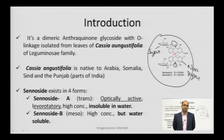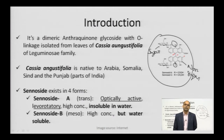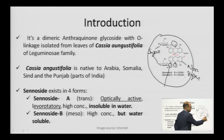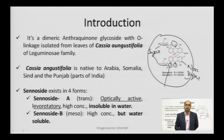The plant Cassia angustifolia belongs to the family of pulses, that is Leguminaceae. You can see that the oxygen is involved in the linkage of the sugar moiety and non-sugar moiety, so you can also term them as O-glycosides. Senosides are O-glycosides, dimeric in nature.